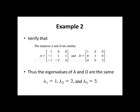Example: Verify that matrices A and D are similar. Recall that this matrix D was produced from some invertible matrix P such that D equals P inverse AP. Since D is a diagonal matrix, the eigenvalues of a diagonal matrix are simply the entries on the main diagonal. So the eigenvalues of A and D must be the same: lambda 1 equals 1, lambda 2 equals 2, and lambda 3 equals 3.